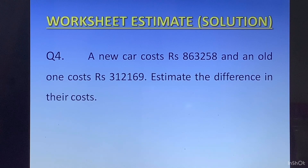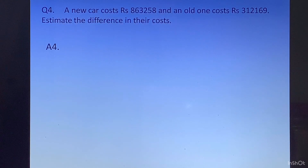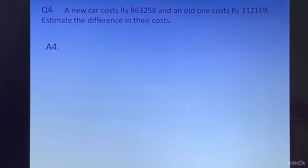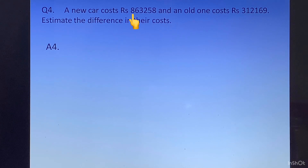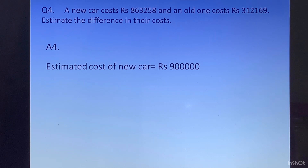Question 4: A new car costs rupees 863258 and an old one costs rupees 312169. Estimate the difference in their costs. The first piece of information is that the new car costs rupees 863258. We look at the digit at the 10,000 place, which is 6. Since 6 is greater than 5, we will increase the digit at the lakhs place by 1, making it 9 lakhs. The estimated cost of the new car is equal to rupees 900000.